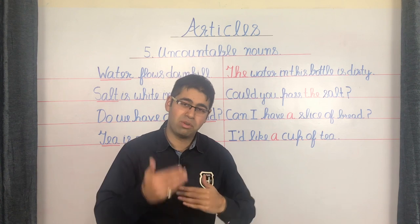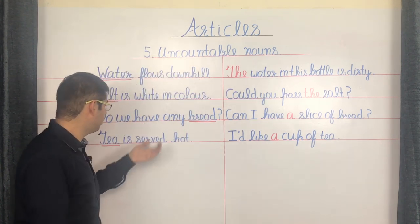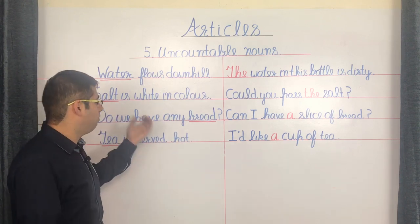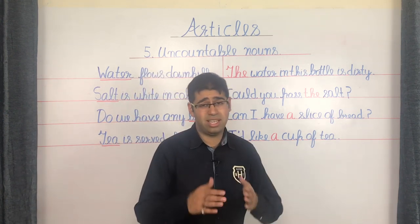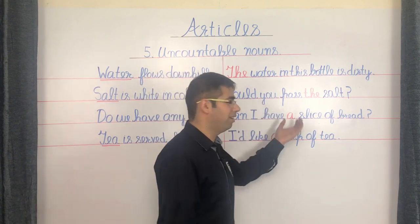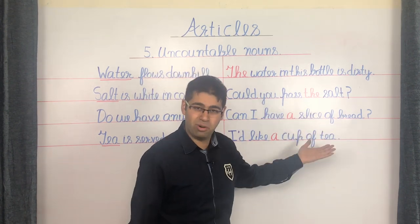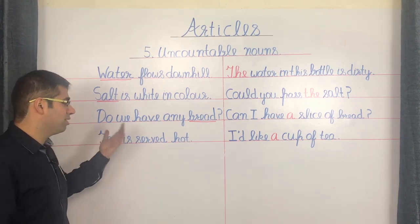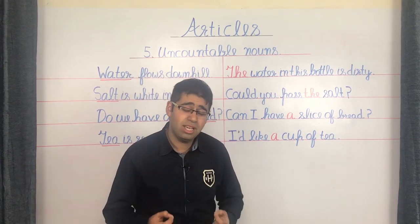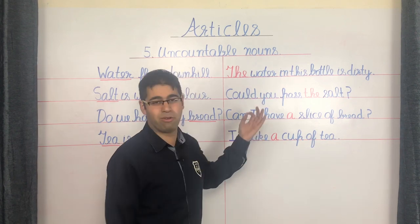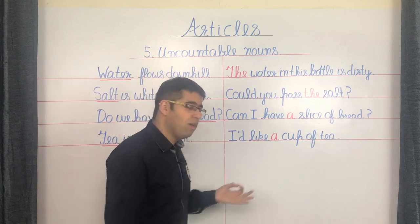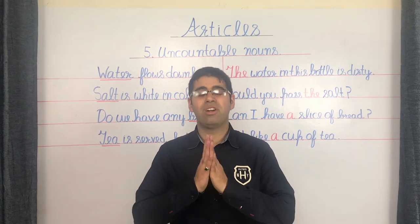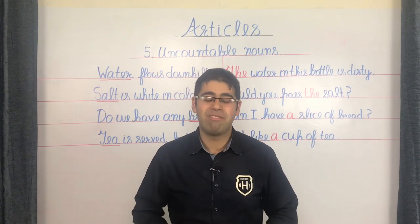Uncountable nouns do require the article A whenever they acquire a countable or measurable shape. For example: 'Do we have any bread?' — bread is uncountable, no article. But when bread turns into countable units like slices: 'Can I have a slice of bread?' Similarly, 'Tea is served hot' — universal fact, no article. But cups of tea are countable: 'I'd like a cup of tea.' That's rule number 5: uncountable nouns require no article unless they turn specific or become measurable units.